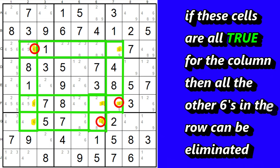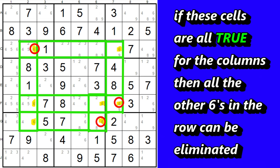Now, if these cells are all true for columns 2, 6, and 7, there can't be any other 6s in those same rows, and so all the remaining 6 candidates can be eliminated.